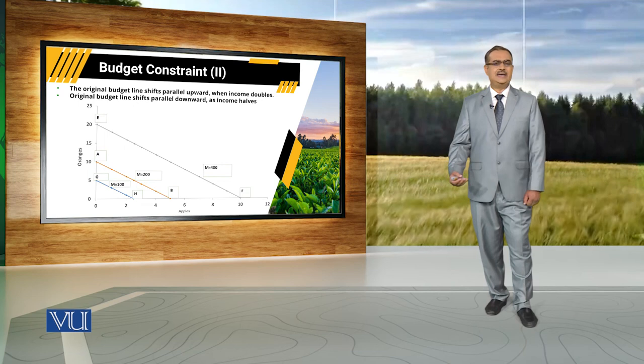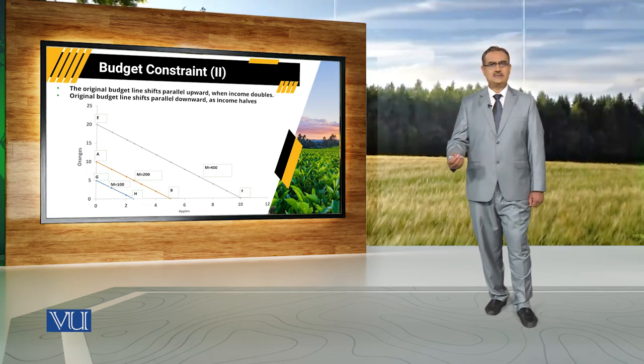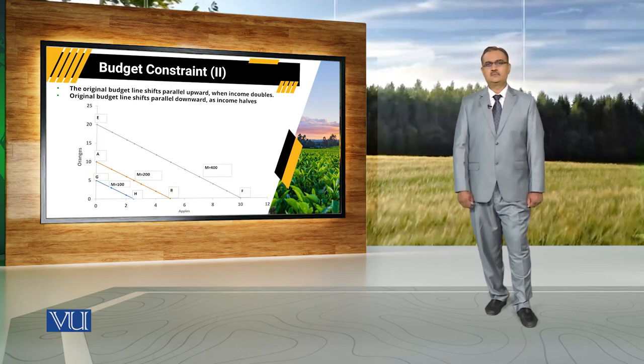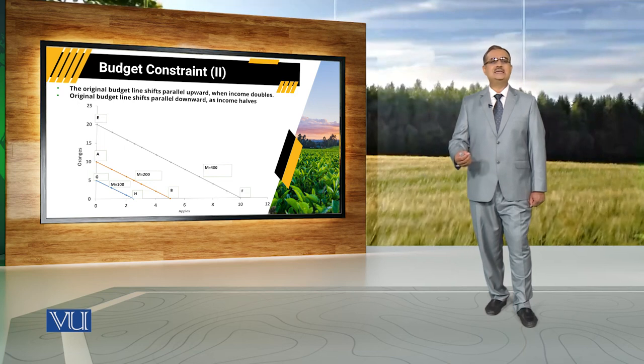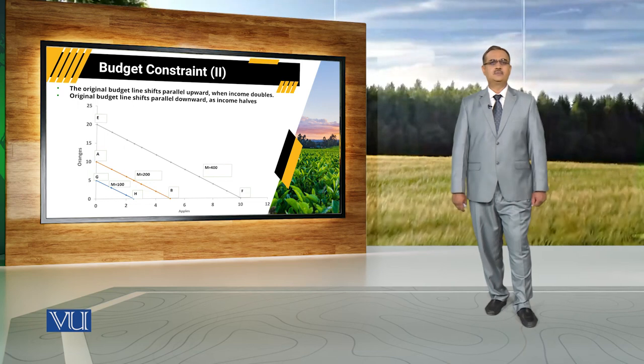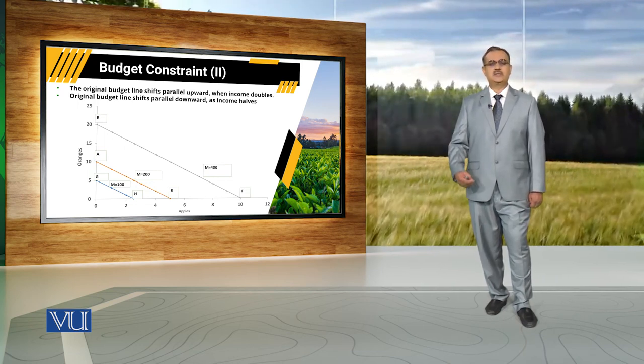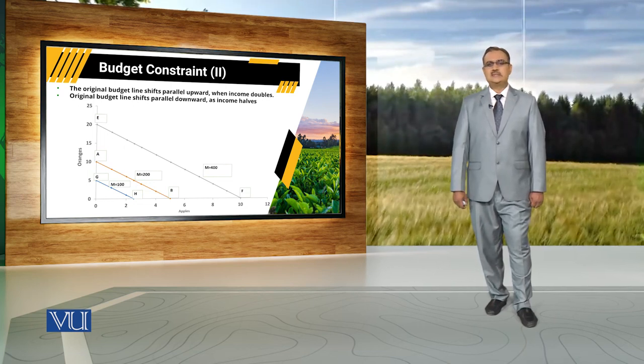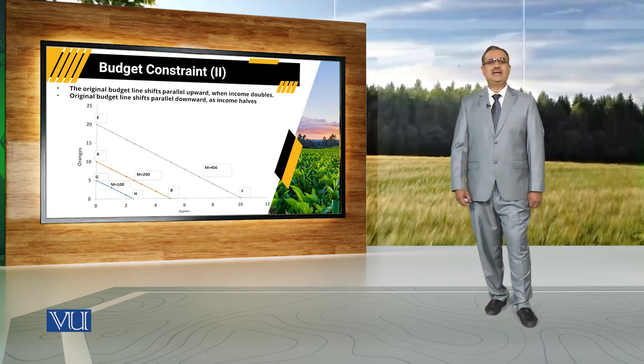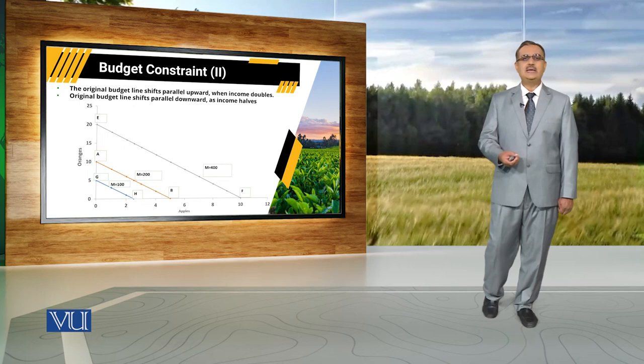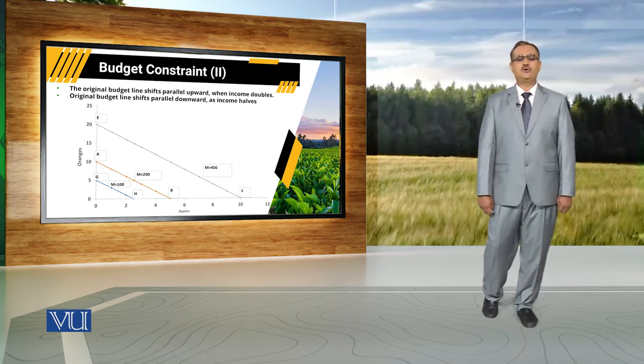In nutshell, if income of the consumer increases keeping prices constant, or if prices of both commodities decrease simultaneously at a certain rate while income remains constant, the budget line will shift outward. Similarly, if income decreases while prices remain constant, or if prices of both commodities increase simultaneously while income remains constant, the budget line will shift downward.